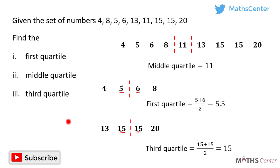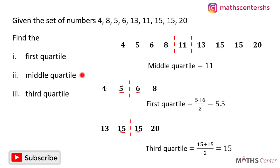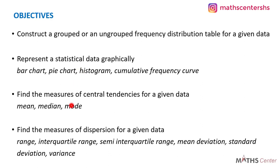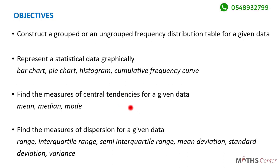With the examples we've considered, I'm sure you can find the first or lower quartile, the middle quartile or the median, and the third or upper quartile of a given set of numbers. In the introductory video to statistics, we set objectives: to construct grouped or ungrouped frequency distribution tables — done; to represent statistical data graphically with bar charts, pie charts, histograms and cumulative frequency curves — done; and to find measures of central tendencies including the mean, median, mode, quartiles, deciles and percentiles — done. We are left with the measures of dispersion.